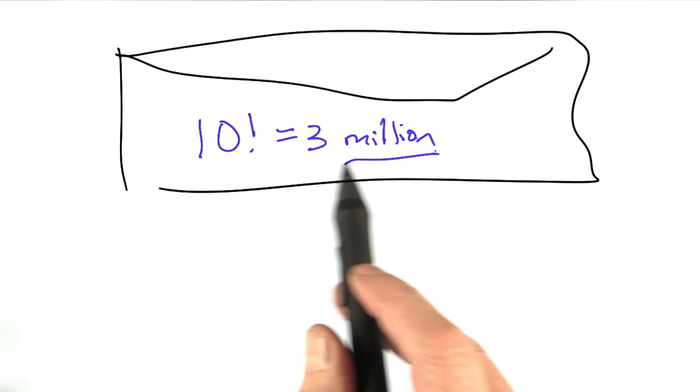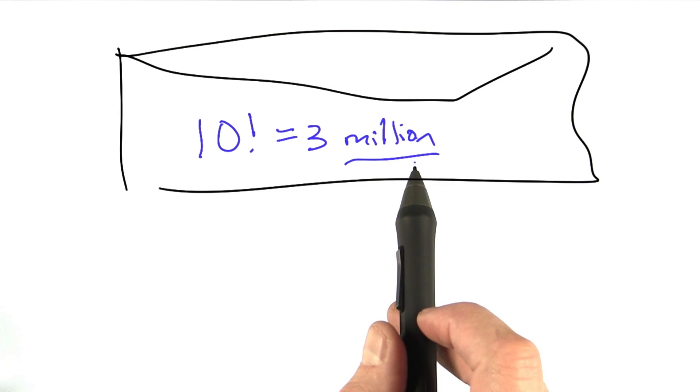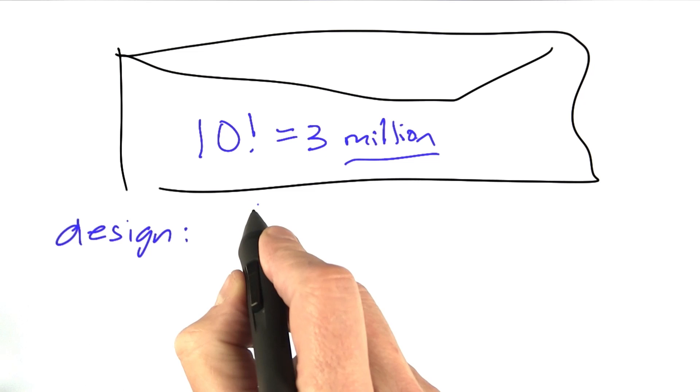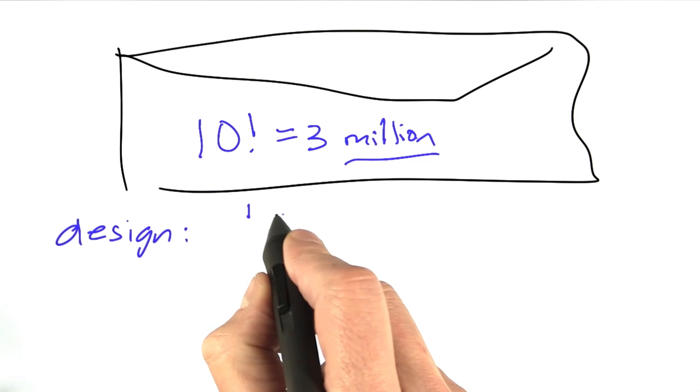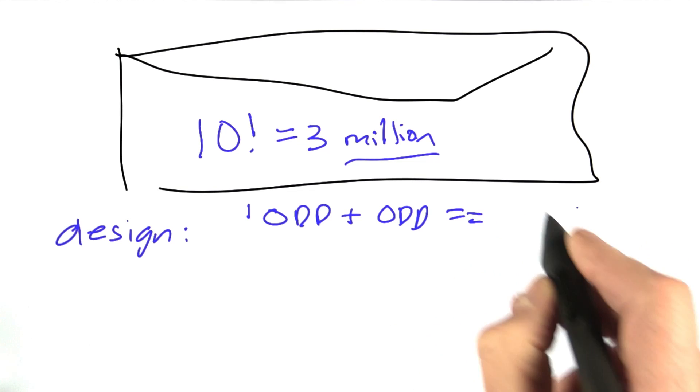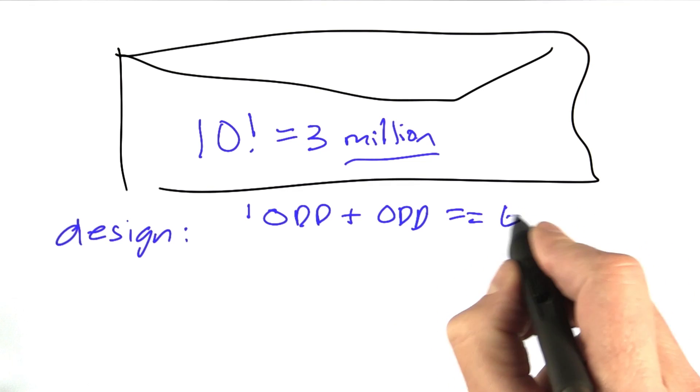But we can expect to be able to try all millions in, not within a second, but within about a minute or so. So now we have an improved design, which is we represent our formula as a string. And we'll use official Python notation here with a double equal sign.